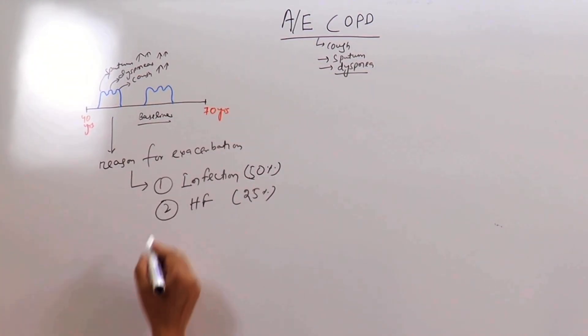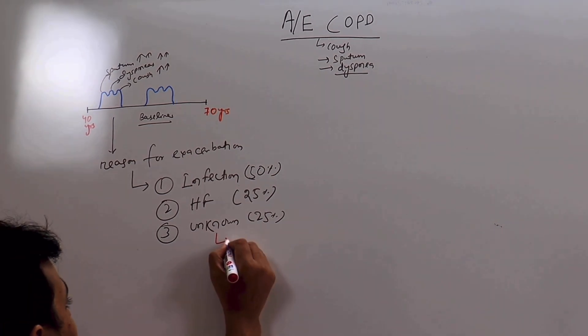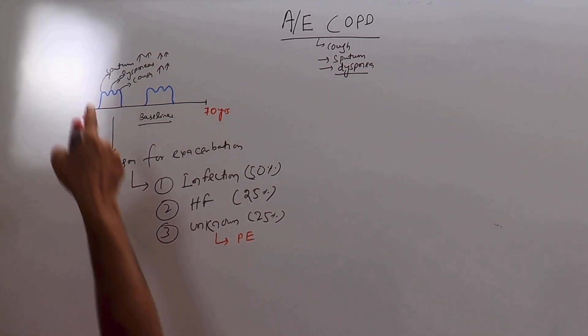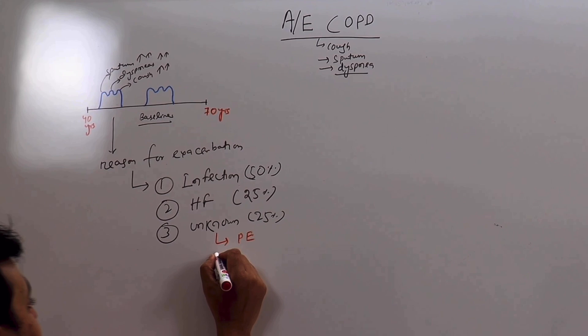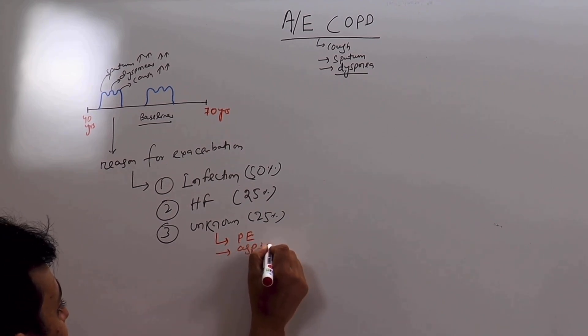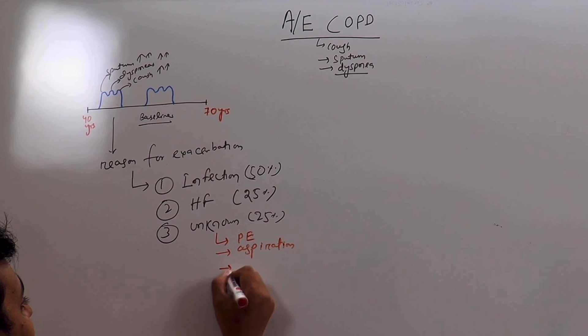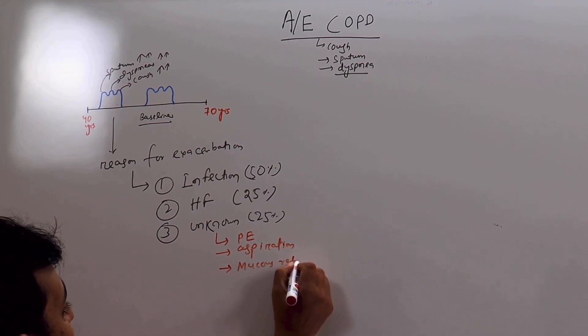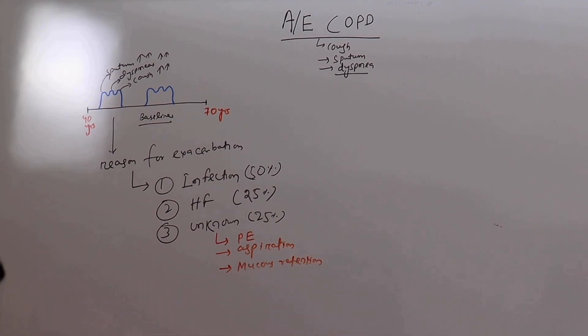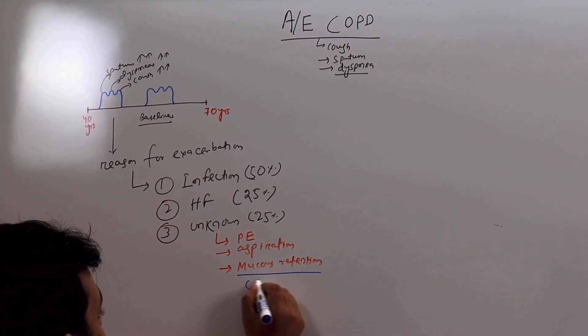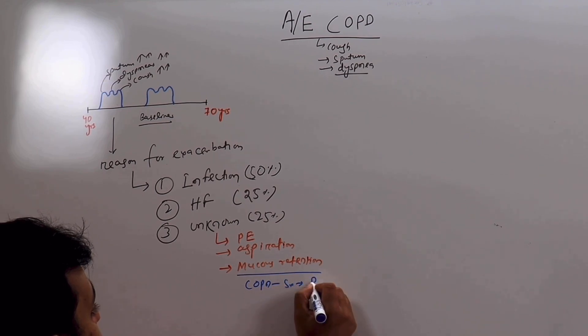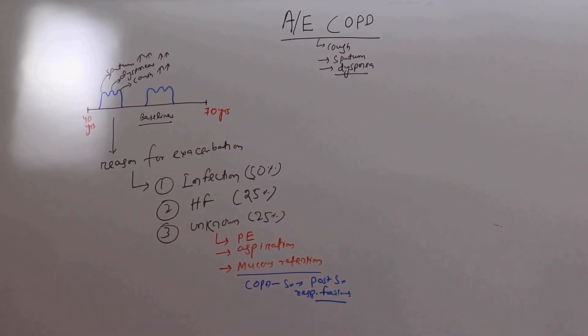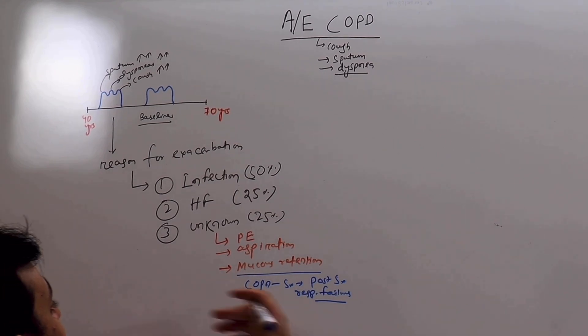There can be a variety of reasons. For example, a person can have a pulmonary embolism precipitating an AECOPD. Patient can have an aspiration. Patient can have mucus retention or secretion, especially very important in post-surgical patients. COPD patient undergoing surgery, so the post-surgical respiratory failure. In COPD, 90% mostly is due to the mucus retention or the retention of sputum causing respiratory failure.